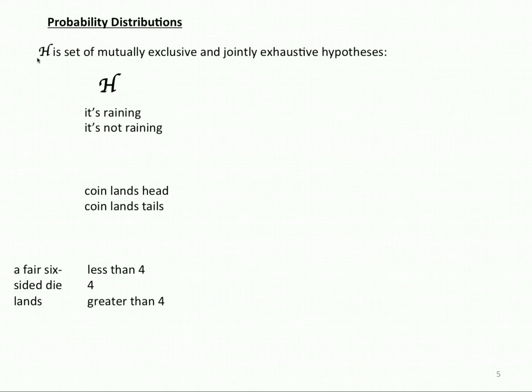Here's a third example. Here Latin H contains less than 4, 4, or greater than 4 as the outcome of a roll of a fair six-sided die.